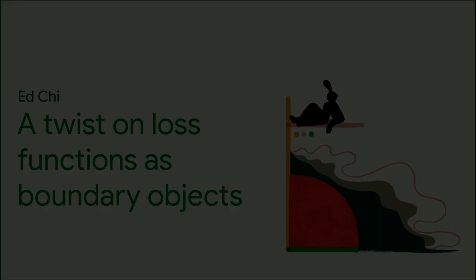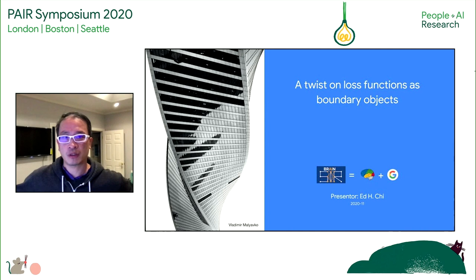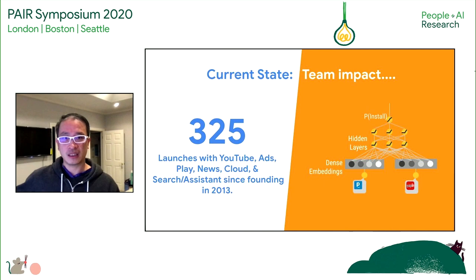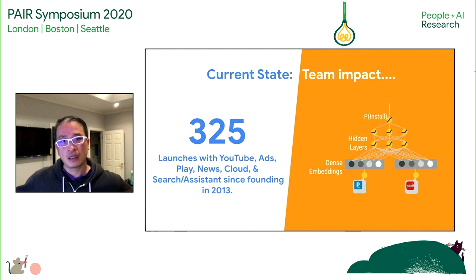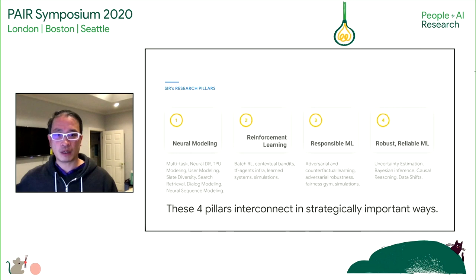Thank you to Martin for inviting me to give this lightning talk. I wanted to talk about my perspectives on a twist on the loss function as boundary object idea. My name is Ed, and I'm from the Brain SIR team at Google. I was an HCI researcher with some connections to the CSCW community, doing a lot of work in social computing. Since arriving at Google, my team has been working on recommender systems, notification systems, and classification systems, making more than 300 improvements across many different product services. My team has focused on four pillars: neural modeling, reinforcement learning, responsible ML and fairness, and robustness techniques for ML systems.